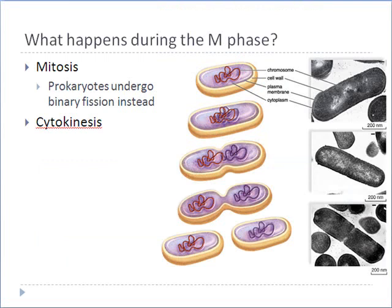Mitosis is a series of events that occur in eukaryotes in order to equally and faithfully divide up the DNA into two daughter cells so that each gets a full complement of DNA. Prokaryotes do not undergo mitosis.